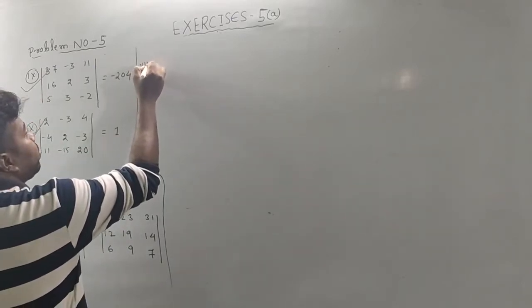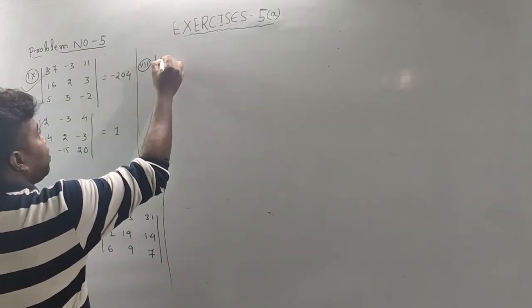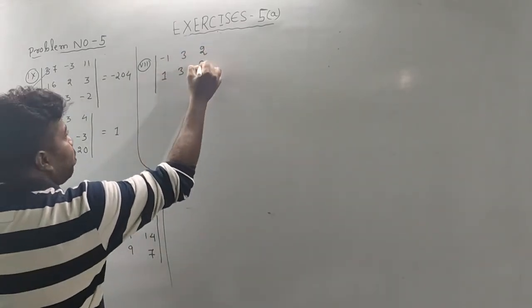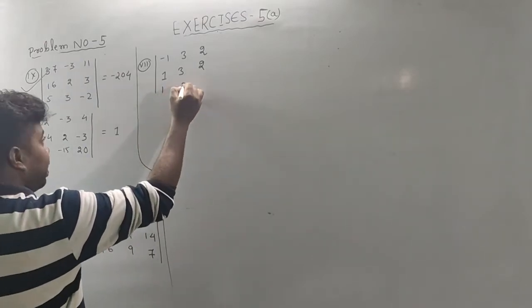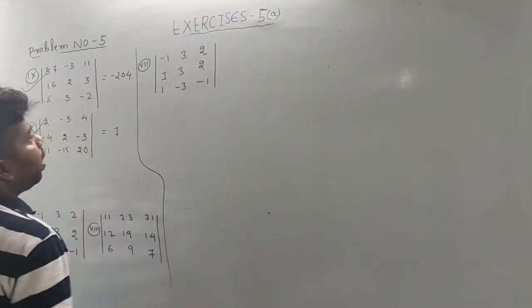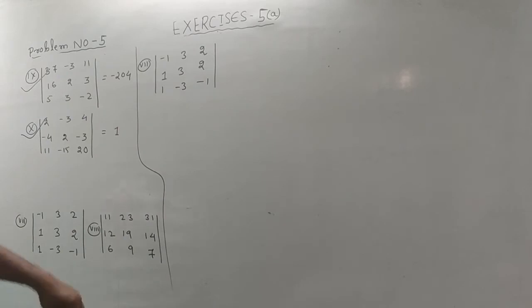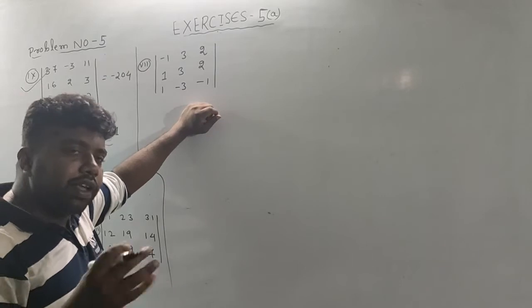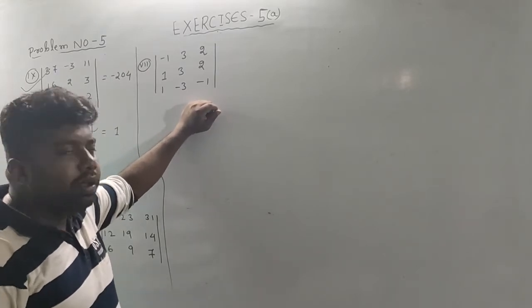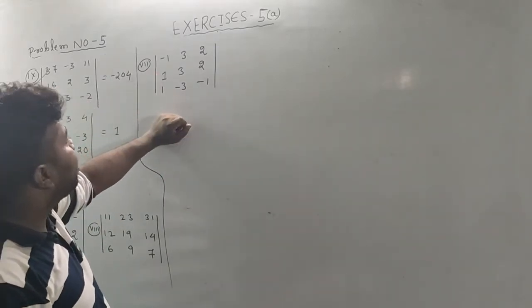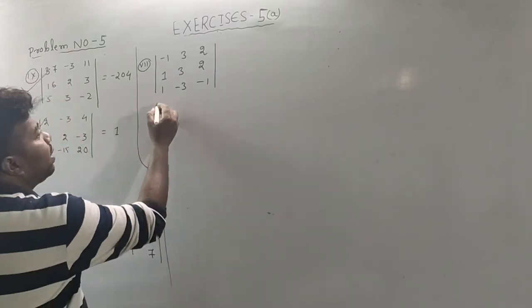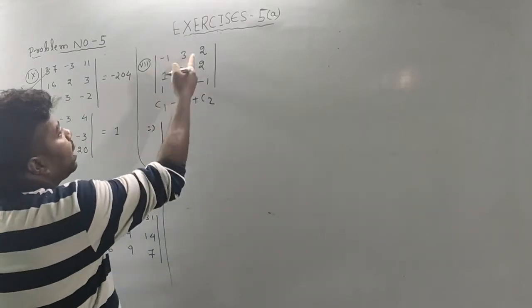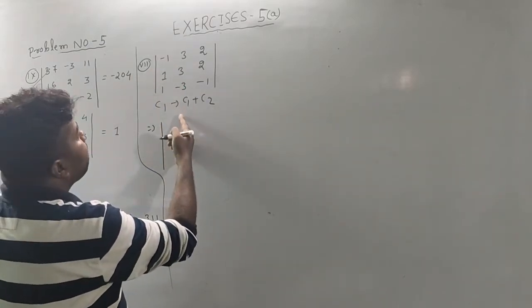So the 7th question: minus 1, 3, 2, 1, 3, 2, 1, 3, 2, 1, minus 3, minus 1. When you have any problem, where you have any idea, you can use the property, then you can expand the problem. When you look at the data, you can see that it is 0. So C1 takes to C1 plus C2.